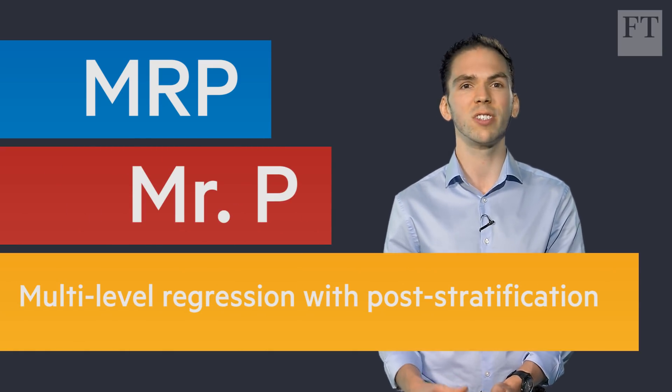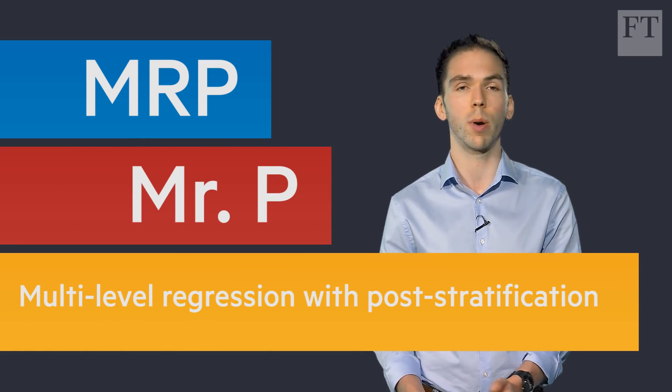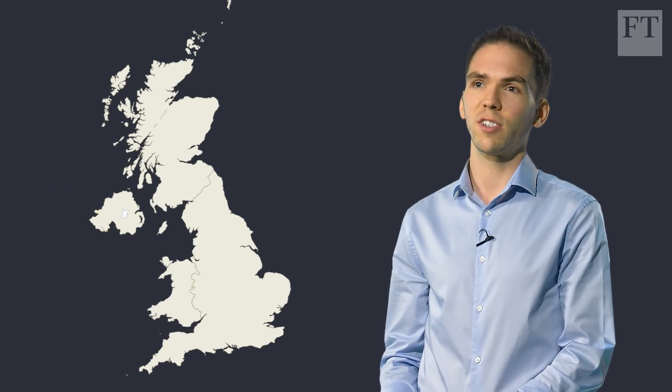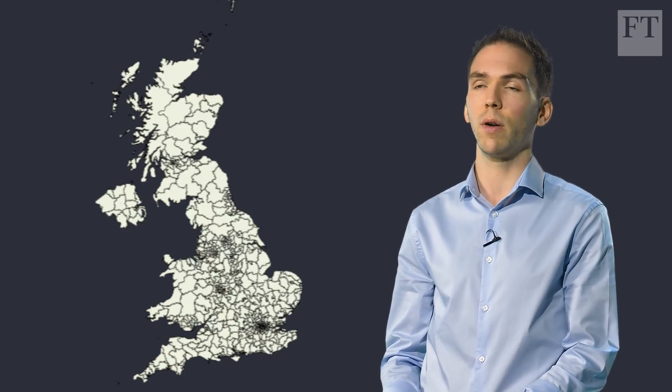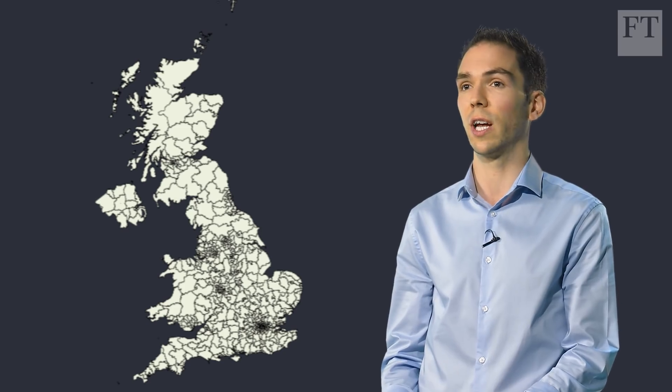It's the hot topic for data journalists at this election. Some call it MRP, some Mr P, but the full name is Multilevel Regression with Post-Stratification. In short, it's a way of using a big national poll to estimate how people will vote at constituency level.